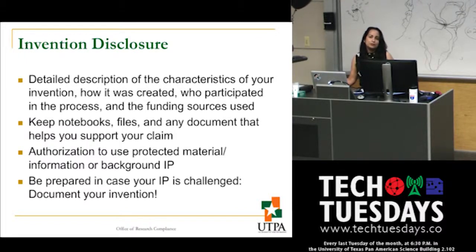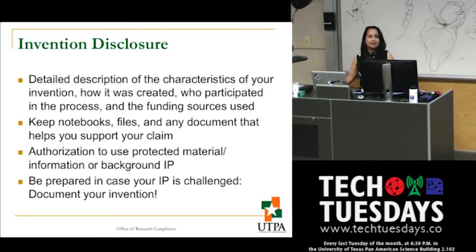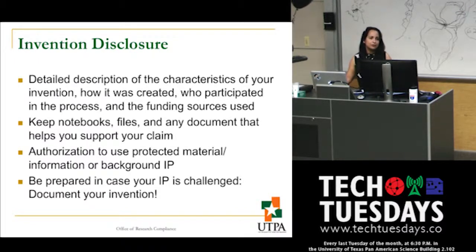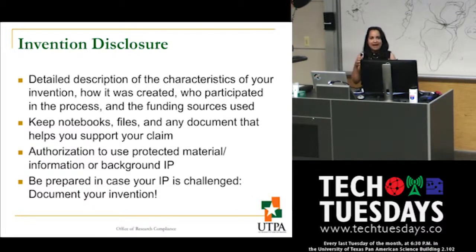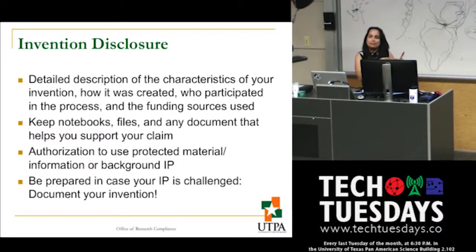If you're participating in research that involves what we call background IP, that background IP may be subject to a patent and owned by somebody else. Before you engage in research with background IP, make sure you have authorization or a license from the owners. Otherwise, you could develop an invention that incorporates that background IP and then be unable to move forward because you lack authorization for that critical piece of your invention.